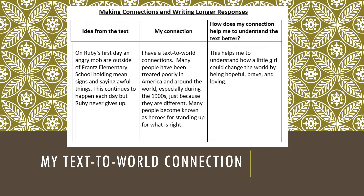Making connections and writing longer responses. Idea from the text: On Ruby's first day, an angry mob was outside of France Elementary School holding mean signs and saying awful things. This continues to happen each day, but Ruby never gives up. My connection: I have a text-to-world connection. Many people have been treated poorly in America and around the world, especially during the 1900s, just because they are different. Many people become known as heroes for standing up for what is right. How does my connection help me to understand the story of Ruby Bridges? This helps me to understand how a little girl could change the world by being hopeful, brave, and loving. This is my text-to-world connection.